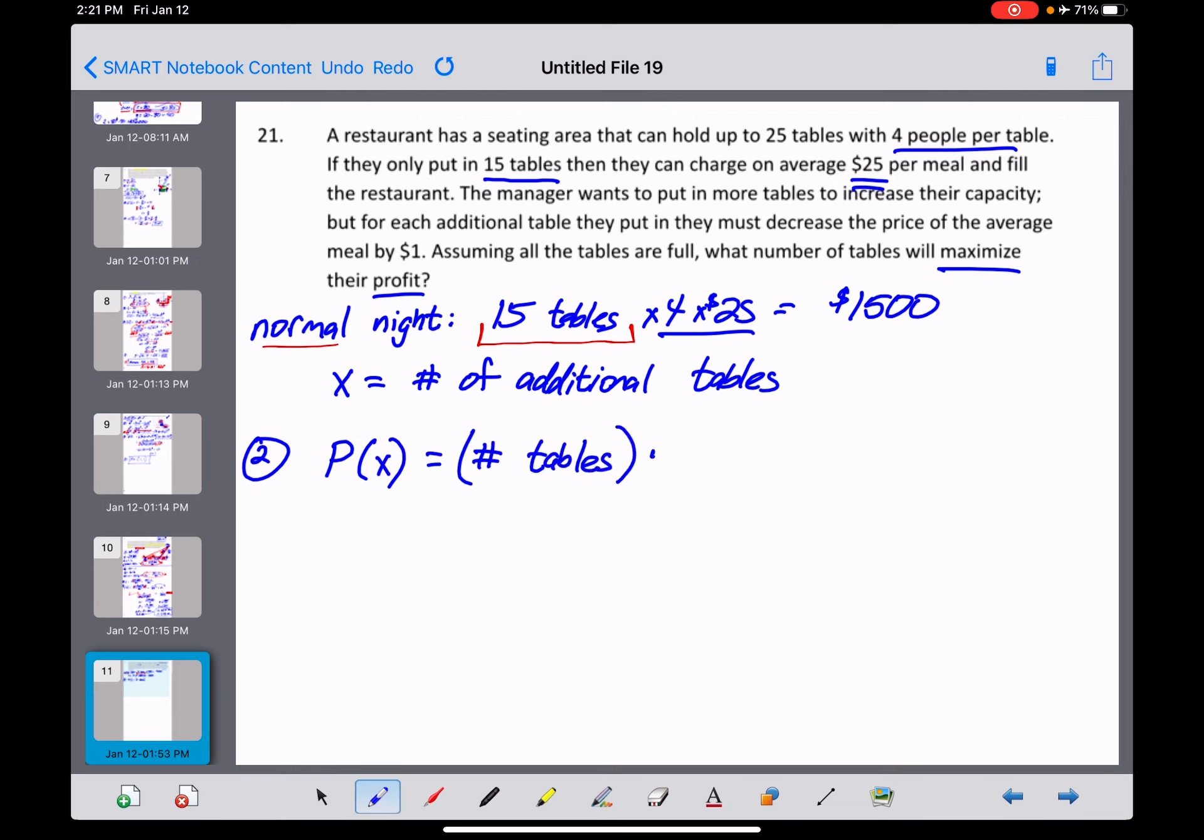And then we're going to multiply that now by, and what I was doing with the 4 times 25, is trying to figure out the profit that we're going to make per table. There you go. So this is the general formula here for how to figure out our profit in a business. How many things are you selling, or in this case, how many tables do we have, times how much money are we going to make per? So let's see what we can do here.